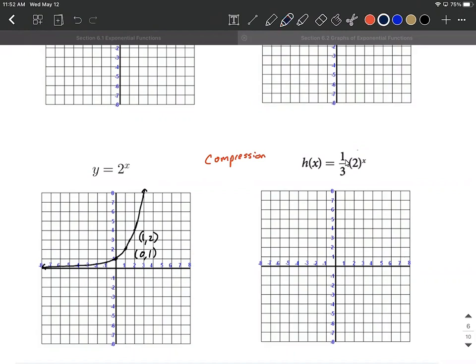To find these additional key points, we start with the same key points, but multiply that y-value by whatever the multiple is in front. So 2 times 1/3 is 2/3, and (0, 1) times 1/3 gives us (0, 1/3).